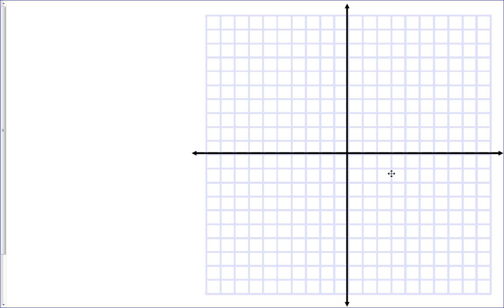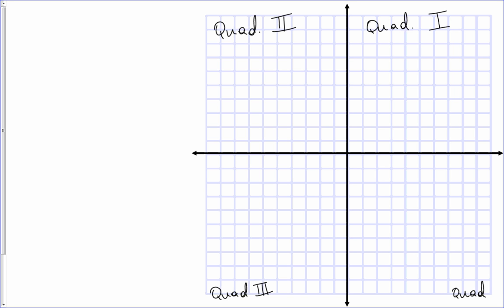In this video we're going to go over ordered pairs and graphing. Here we have a coordinate plane — a rectangular coordinate plane. This coordinate plane is divided up into four quadrants. Quadrant one, quadrant two, quadrant three, and quadrant four, represented using Roman numerals. This point here in the center is called the origin.